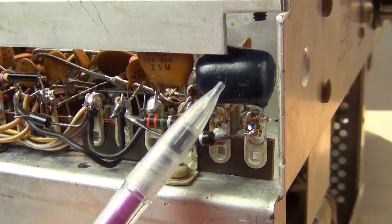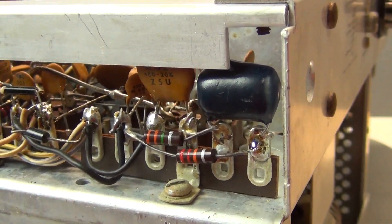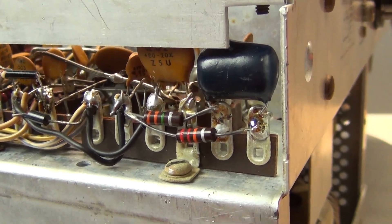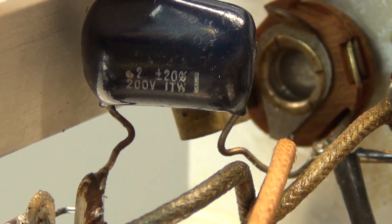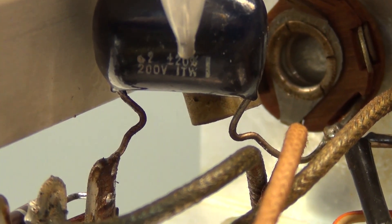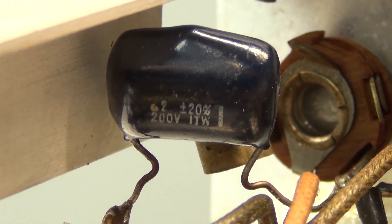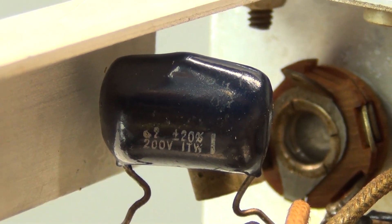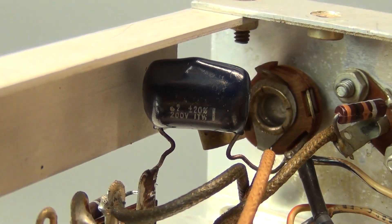There's also seven of these .2 microfarad caps on the rig. Per the Heathkit assembly manual, they're listed as Mylar caps, which is DuPont's trademark for polyester. These typically hold up well over the years, so I was suspecting that they might still be fine.